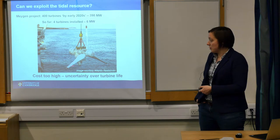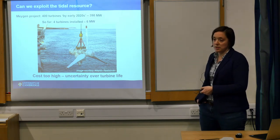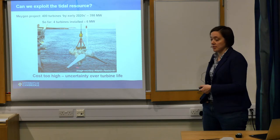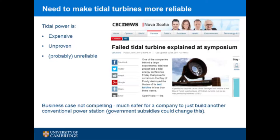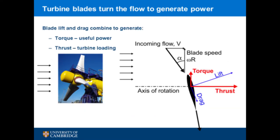The big problem with these is that the cost is high, but also the cost is uncertain. We're not sure how long these things are going to last once they get in the water, so we need to make them more reliable. There were quite a few high-profile failures with early prototypes, and that kind of news article is not what you want if you're trying to make a business case to a bank. Government subsidies could change this, but really predictability is the problem. Now I'm going to talk about how a tidal turbine works and how we can make it more reliable.